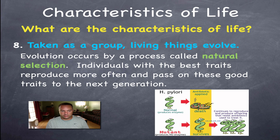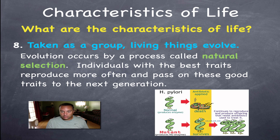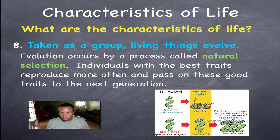The final characteristic of life is that, taken as a group, all living things will evolve. Evolution occurs through natural selection. Sexual reproduction produces a population of individuals with slightly different genetic codes and slightly different traits. Nature selects individuals who have good traits; those individuals reproduce more often and pass their traits on to the next generation. We'll go over evolution in much more detail in chapters 14-15 in the second semester.